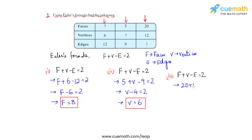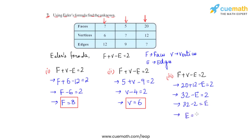So 20 plus 12 minus e is equal to 2. Solving the left hand side we get 32 minus e is equal to 2, or 32 minus 2 is equal to e. Transposing e to the right hand side and 2 to the left hand side, we get e is equal to 30. So we have got the unknown of the third column as well. This is how we use Euler's formula to find the unknown and answer the seventh question of this third exercise.